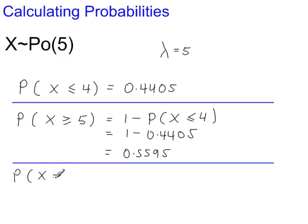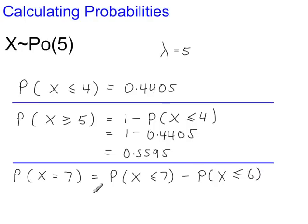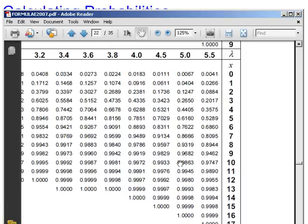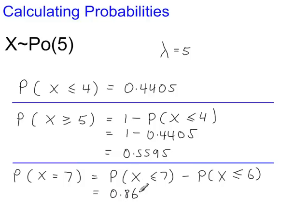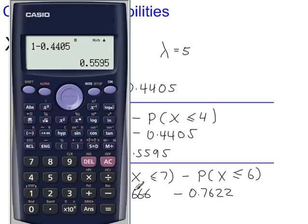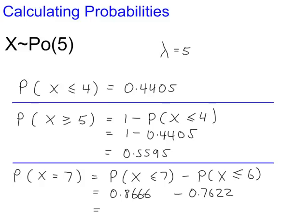The probability that x equals 7 is P(X ≤ 7) minus P(X ≤ 6). Looking up P(X ≤ 7) gives 0.8666, and P(X ≤ 6) gives 0.7622, so the answer is 0.1044.